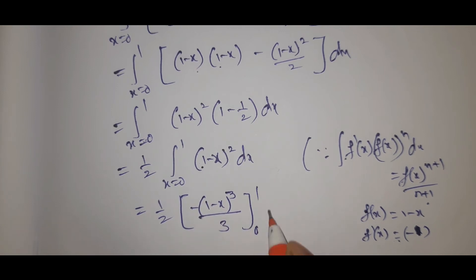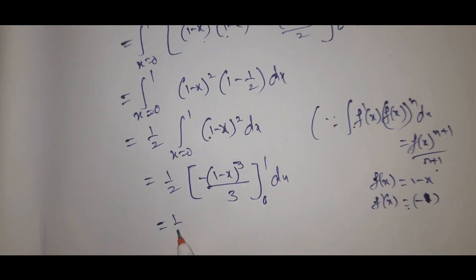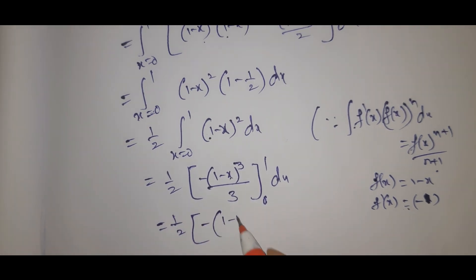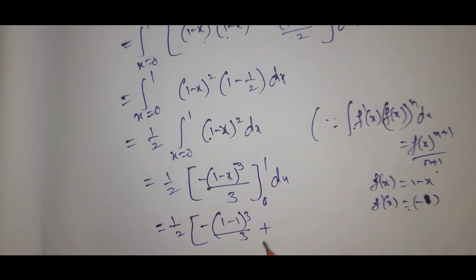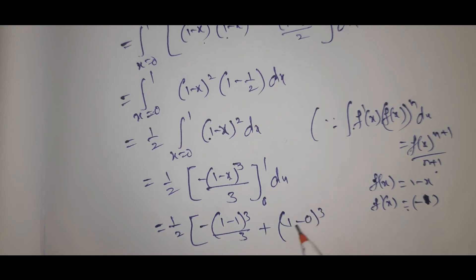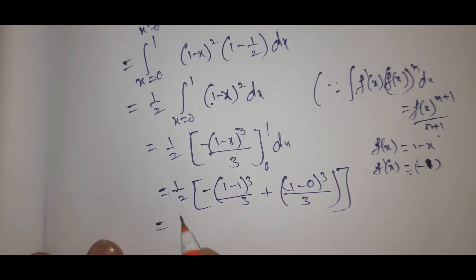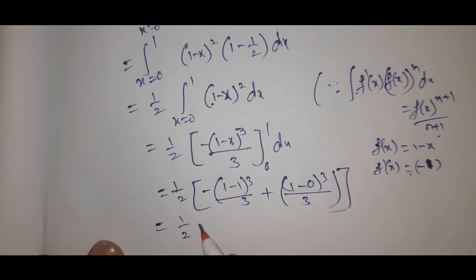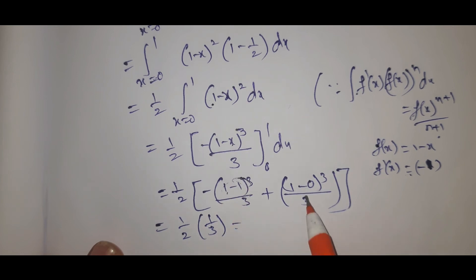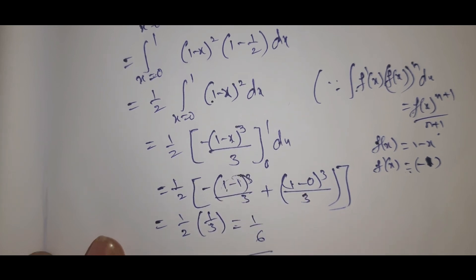So 1 by 2 times minus 1 minus x whole cube by 3, from 0 to 1. Apply upper limit: 1 minus 1 whole cube by 3, minus of minus 1 minus 0 whole cube by 3. That gives 1 by 2 times minus into minus, plus 1 by 3, into 1 by 3. Upper limit gives 0, lower limit gives 1 by 3, so the answer is 1 by 6.